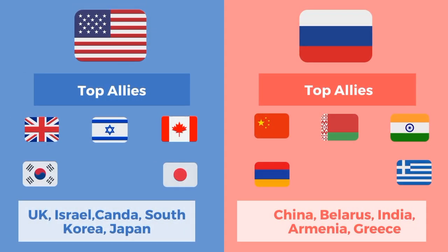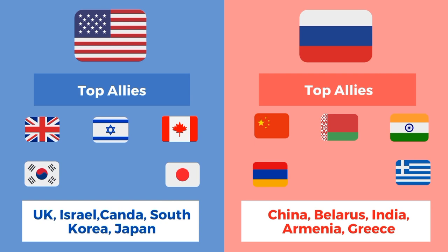US top allies are the UK, Israel, Canada, South Korea, and Japan. Russia's top allies are China, Belarus, India, Armenia, and Greece.